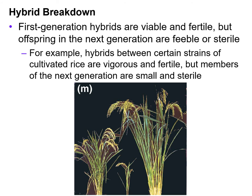The last post-zygotic barrier is hybrid breakdown. First-generation hybrids are viable and fertile, but offspring in the next generation are feeble or sterile. For example, hybrids between certain strains of cultivated rice are vigorous and fertile, but members of the next generation are small and sterile. Those are our three examples of post-zygotic barriers.